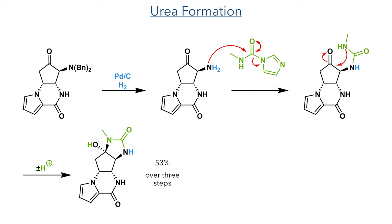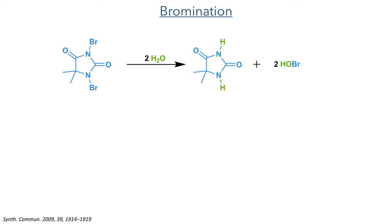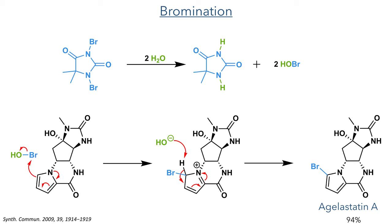With this ring complete, all that remained was a simple bromination. The compound was reacted with dibromantin, which forms hypobromous acid in the presence of water. This is a source of electrophilic bromine, which is attacked by the pyrrole ring primarily from the two position. Deprotonation of the resulting cationic intermediate restores aromaticity and formed Agelostatin A in a 94% yield.